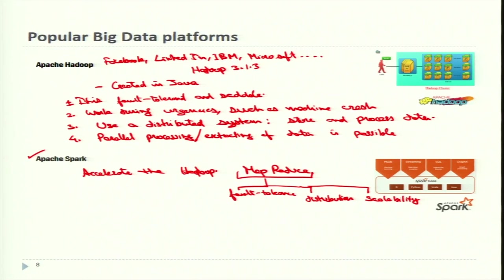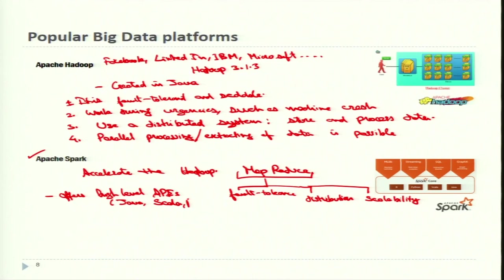Apache Spark offers the ability for in-memory computing to deliver speed. It offers high-level APIs including Java, Scala, Python, and R. In Hadoop clusters, Spark can run applications up to a hundred times faster. Due to its ability to work with various data sources including OpenStack, HDFS, and Cassandra, it is highly versatile.